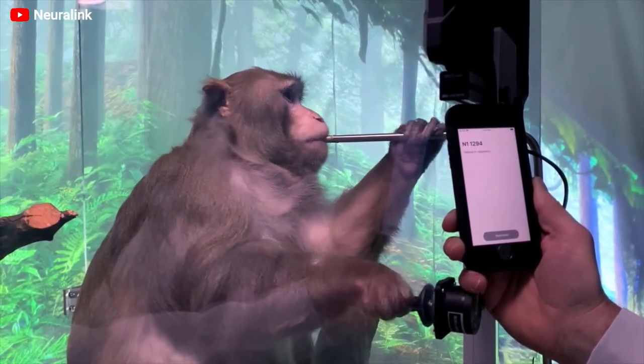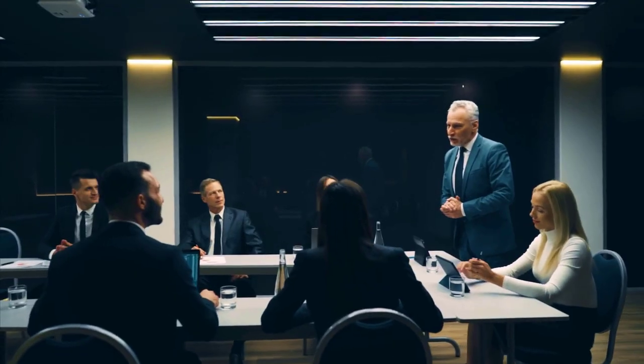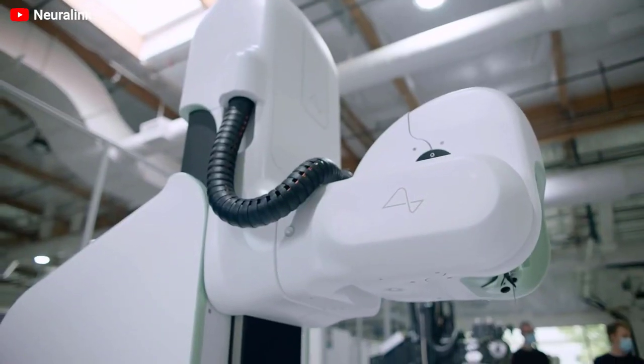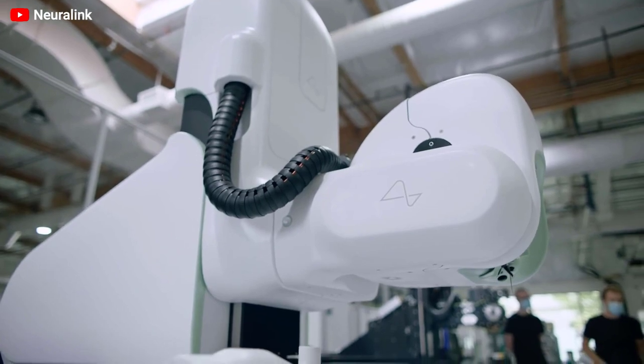Neuralink is working hard to ensure that the implants are safe. There are also a number of announcements from the company that there may be human trials before the end of this year. Elon Musk's chips won't make us smarter than artificial intelligence yet, but they might help people with serious neurological diseases such as Parkinson's or Alzheimer's.